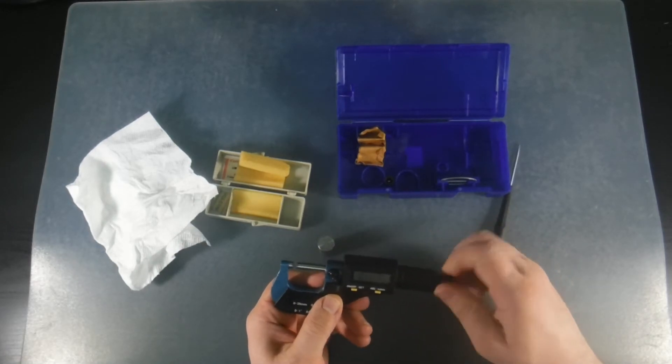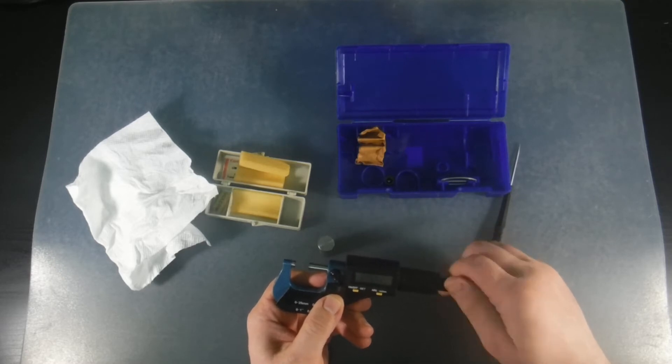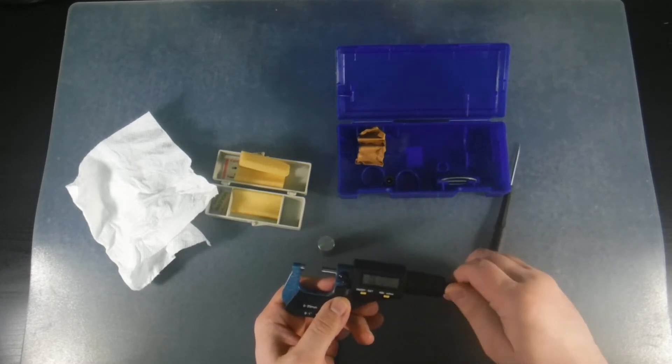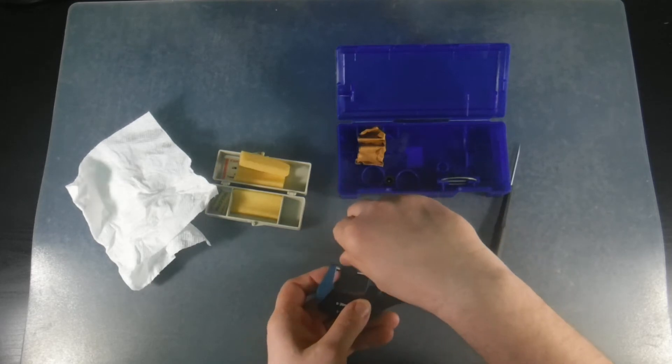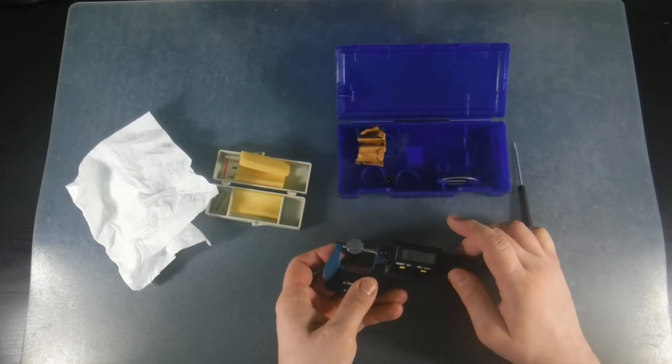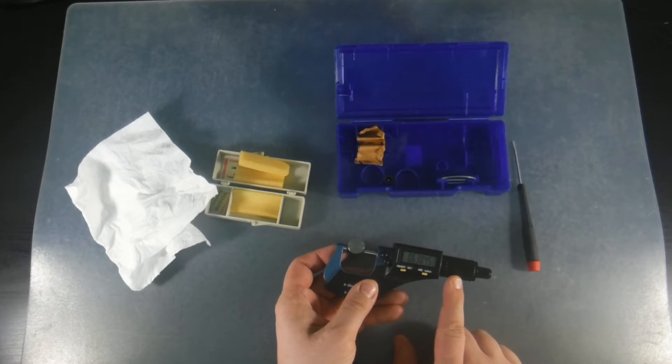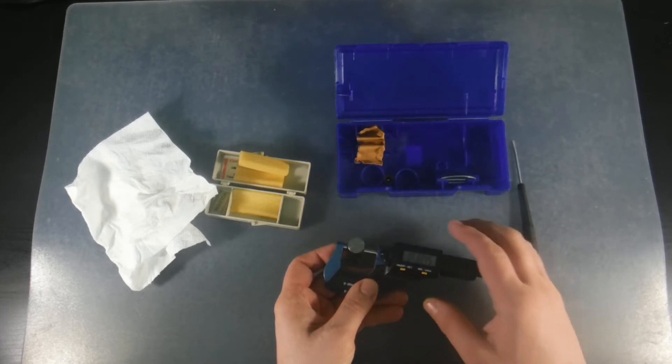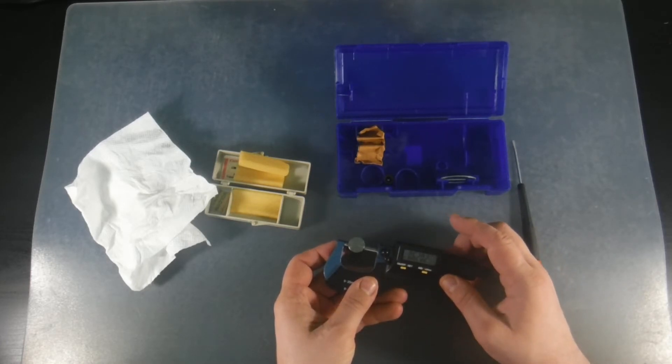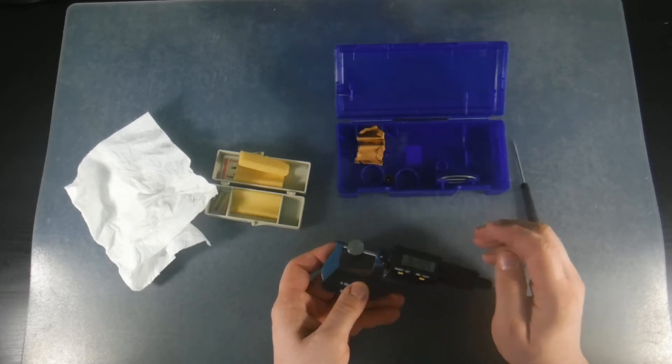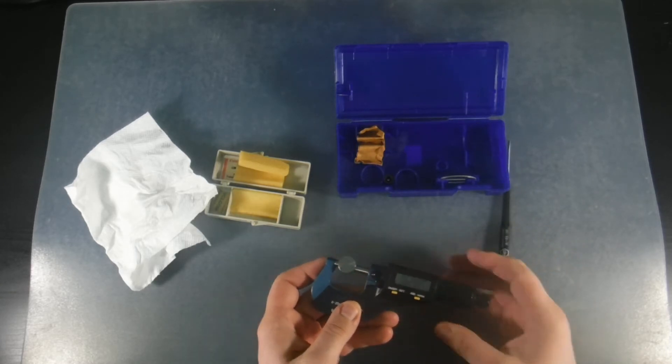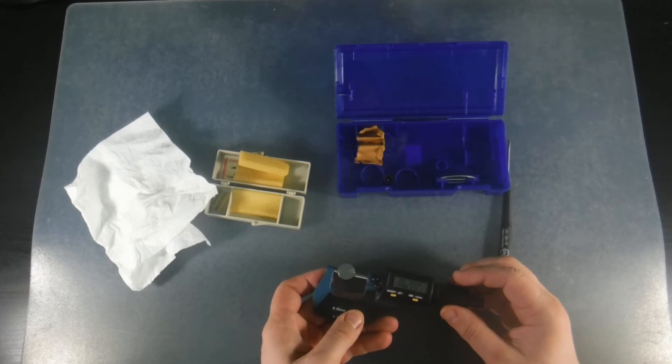We're going to open the micrometer up a little bit more than 0.62. The ratchet that actually provides the consistent tension is in the large barrel, not the small one on this micrometer. Right now we're reading 0.62005.